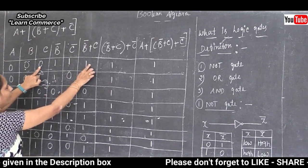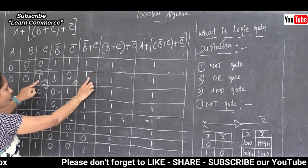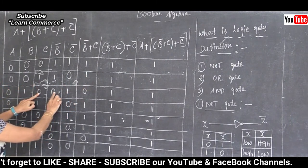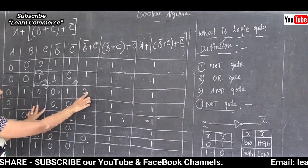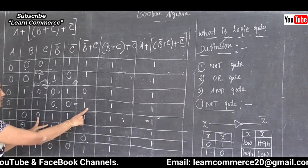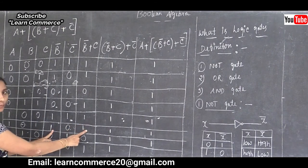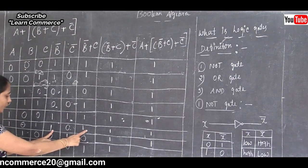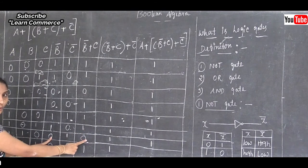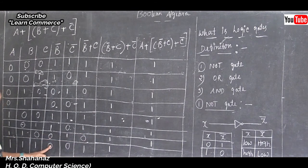Computing complement B plus C: 0 plus 1 = 1, 1 plus 1 = 1, 0 plus 0 = 0, 1 plus 0 = 1, 0 plus 1 = 1, 1 plus 1 = 1, 0 plus 0 = 0, 1 plus 0 = 1.